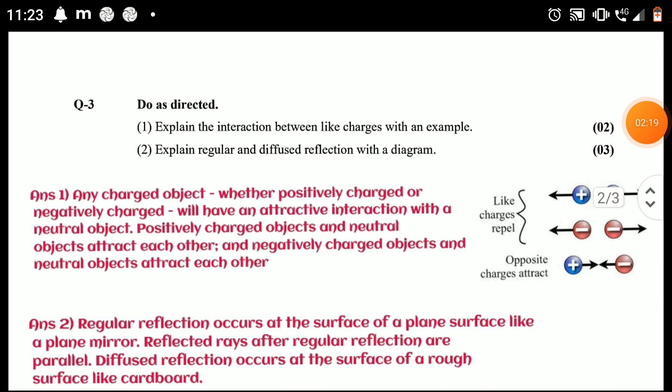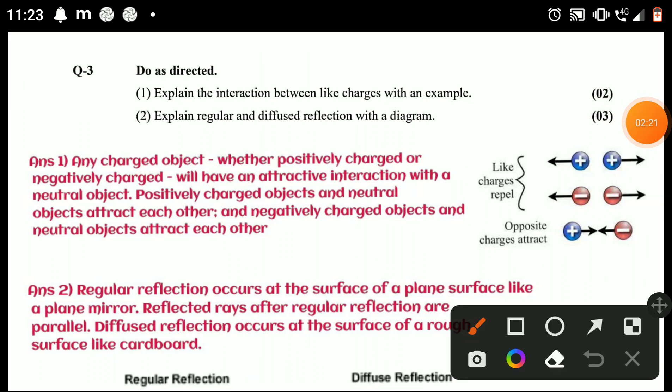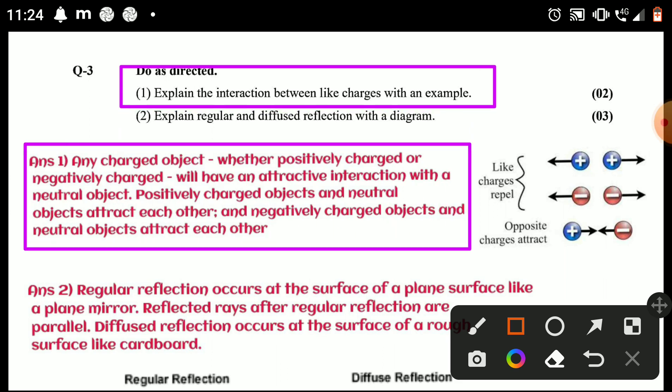Explain the interaction between like charges with an example. Any charged object, whether positively charged or negatively charged, will have an attractive interaction with a neutral object. Negatively charged objects and neutral objects attract each other. Whereas like charges repel - if both are positively charged they will repel; if both are negatively charged they will repel, but positive and negative will attract.